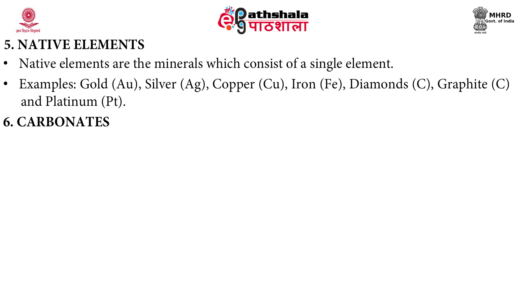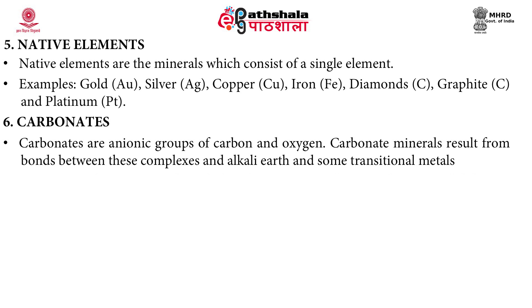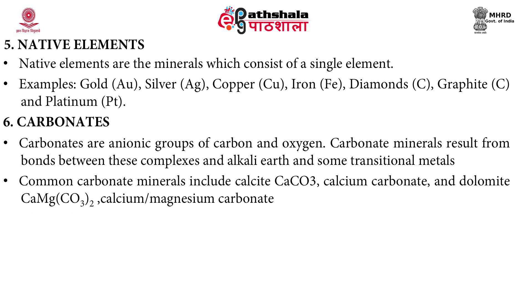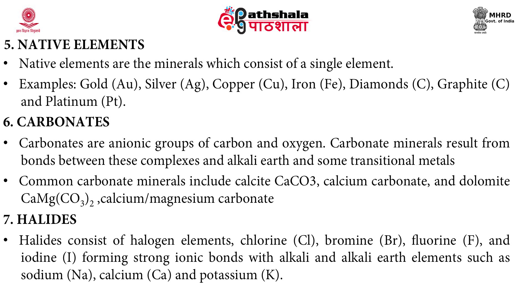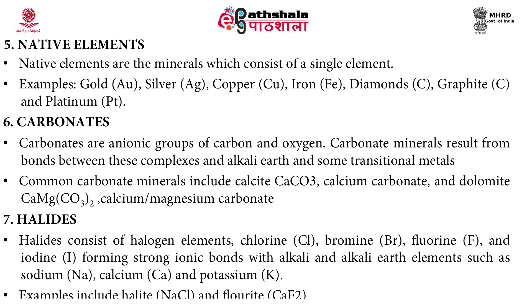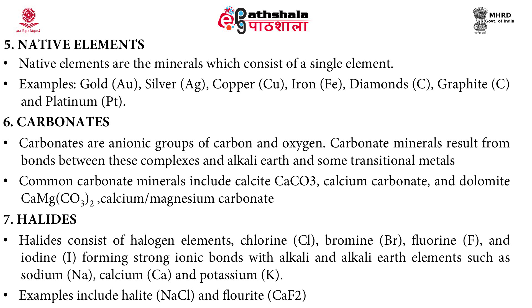Carbonates are anionic groups of carbon and oxygen. Carbonate minerals result from bonds between these complexes and alkali earth and some transition metals. Common carbonate minerals include calcite, calcium carbonate, and dolomite, calcium magnesium carbonate. Halides consist of halogen elements — chlorine, bromine, fluorine and iodine — forming strong ionic bonds with alkali and alkali earth elements such as sodium, calcium and potassium. Examples include halite and fluorite.